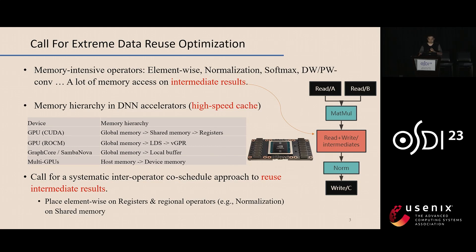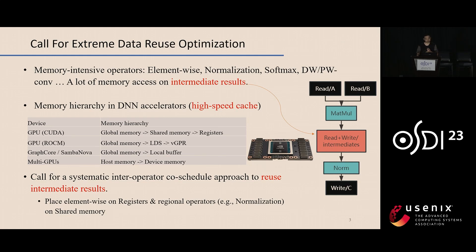On the other hand, most hardware accelerators have a memory hierarchy with several layers of memory, including the on-chip high-speed cache. For example, on the GPU platform, besides global memory, we also have faster shared memory and registers. So in order to better optimize on these models, we need a systematic approach to reuse these intermediate results on faster on-chip memory — for example, placing elementwise operators on registers or placing regional operators like softmax on shared memory.